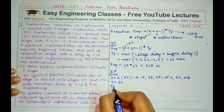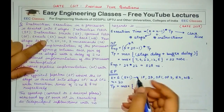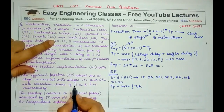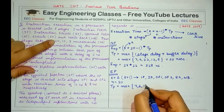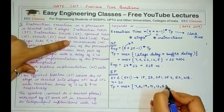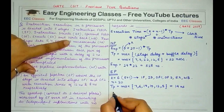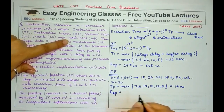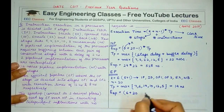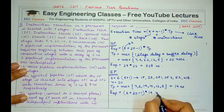For EP, TP = maximum of (stage delay + buffer delay): 5+2=7, 4+2=6, 12+2=14, 8+2=10, 10+2=12, 3+2=5. The maximum is 14, so TP = 14 nanoseconds. The total execution time EEP = (6 + 20 − 1) × 14 = 25 × 14 = 350 nanoseconds.